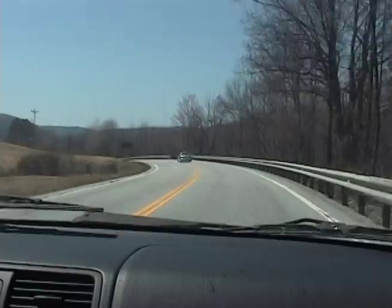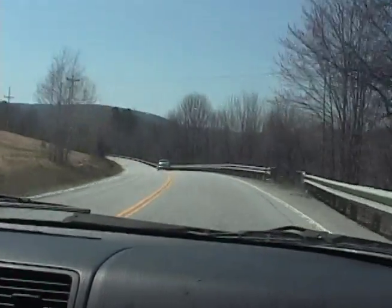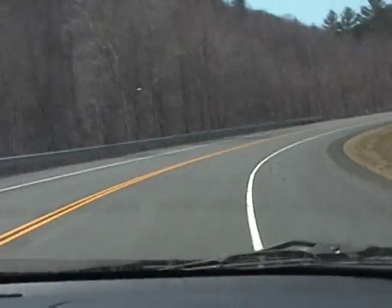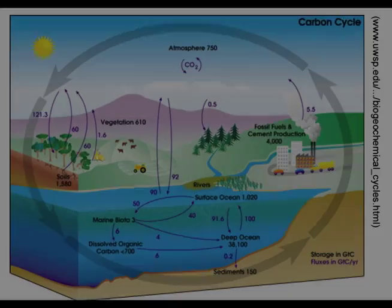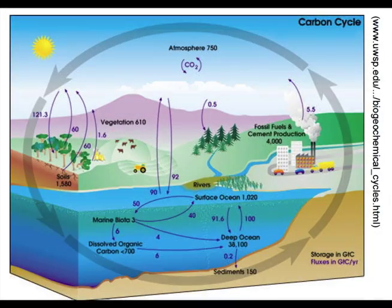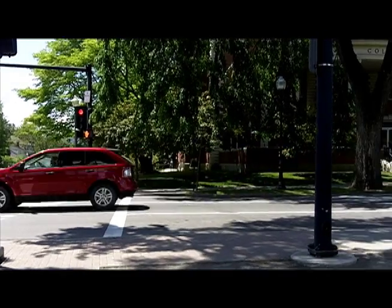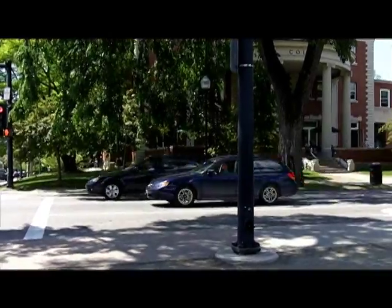The recent increase in CO2 concentrations in the atmosphere has been due to the burning of fossil fuels, which are made up of carbon that has been trapped in the ground for hundreds of thousands of years. Humans have disrupted the cycle by releasing this carbon — which has not been part of the atmospheric carbon cycle for hundreds of thousands of years — into the atmosphere. This carbon is known as fossil carbon.